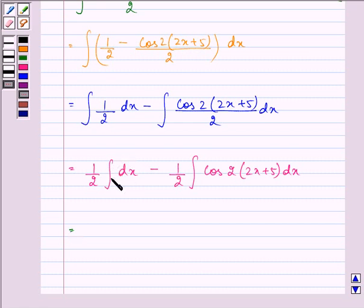The constant comes out of the integral. Integral of dx is x minus 1 by 2 integral of cos. Now here we can write cos 2, 2x plus 5 as integral of cos 2x,